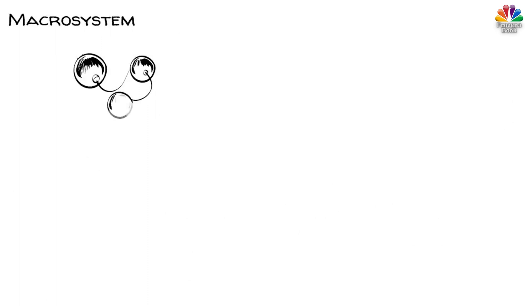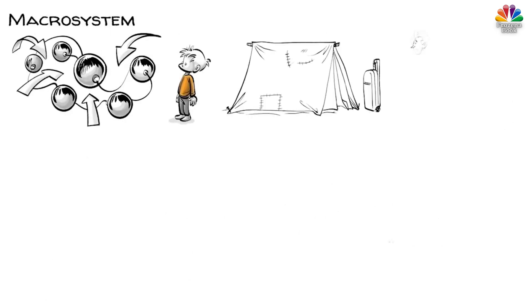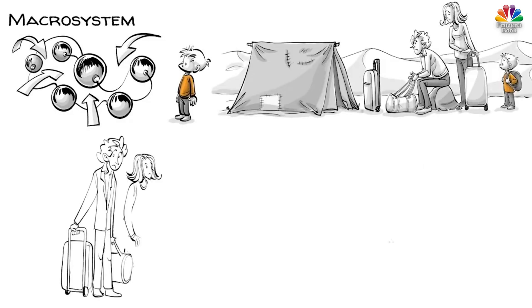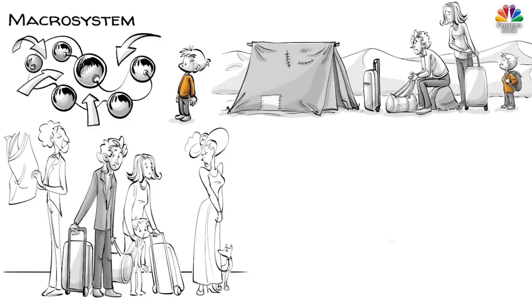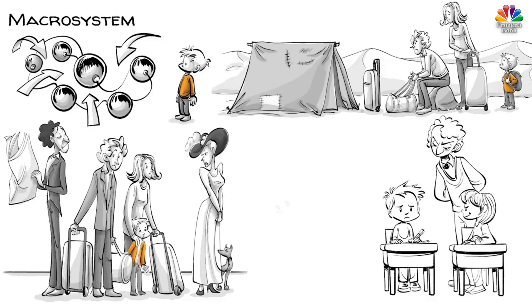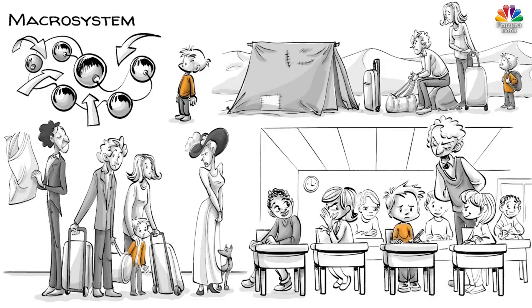The macrosystem describes the overarching culture that influences all other systems, such as a child's geographic location and ethnicity. Intelligent people who happen to live in bad places are more likely to move to better ones, but that also means that they are more likely to be strangers in a richer society. So regardless of the child's biological potential or upbringing, on a macro level, he or she may still be at a disadvantage.